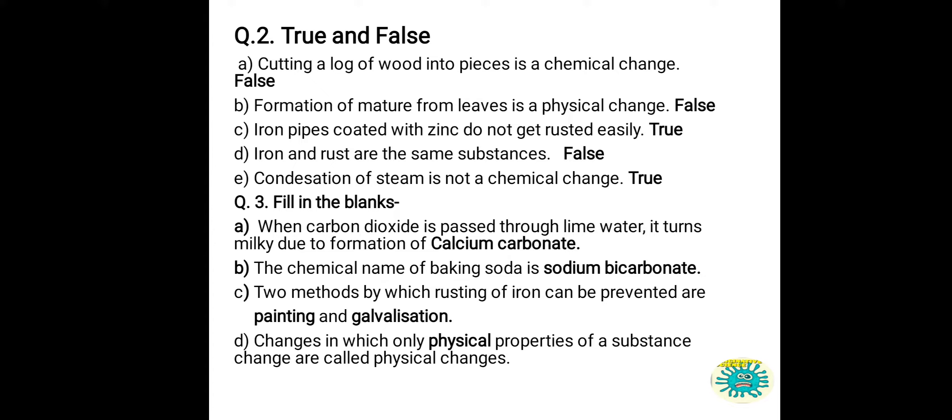The next part: formation of mature leaves from leaves is a physical change — that is false, because formation of mature leaves is a chemical change. Iron pipes coated with zinc do not get rusted easily — that is true, because coating iron pipes with zinc, a process called galvanization, prevents rusting.